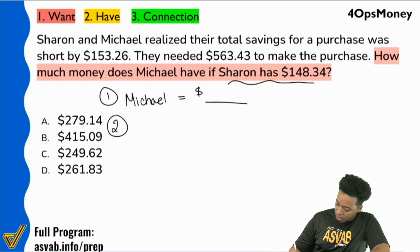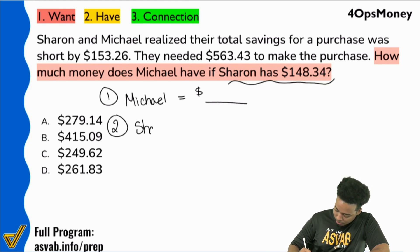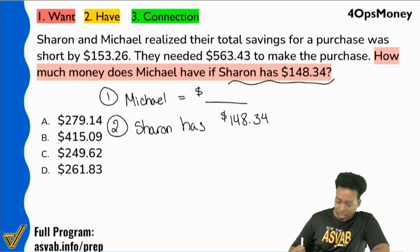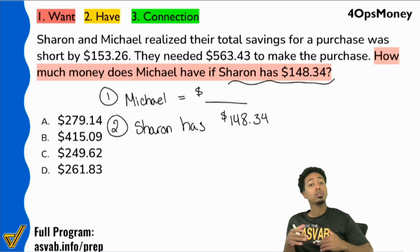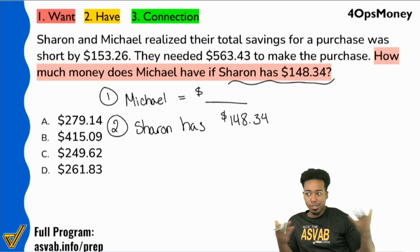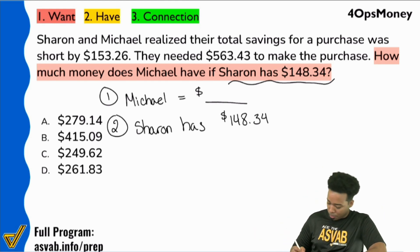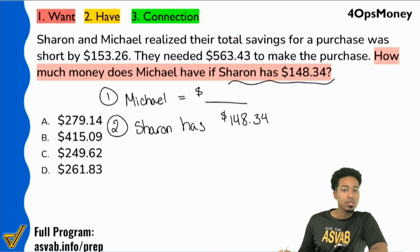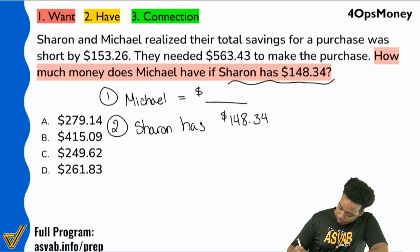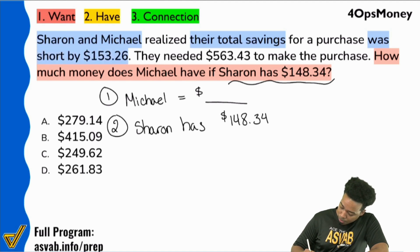We know that Sharon has $148.34, so I'm just going to write that down. Now notice, everybody, we don't know exactly what we need to do yet. Don't freak out if it's not obvious at first. Take a second, write the information down, and see the relationships. What else do we have here? It says Sharon and Michael realized their total savings for a purchase was short by $153.26. So their total was short by $153.26.